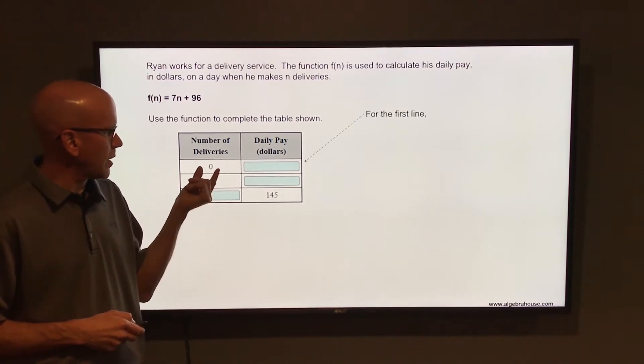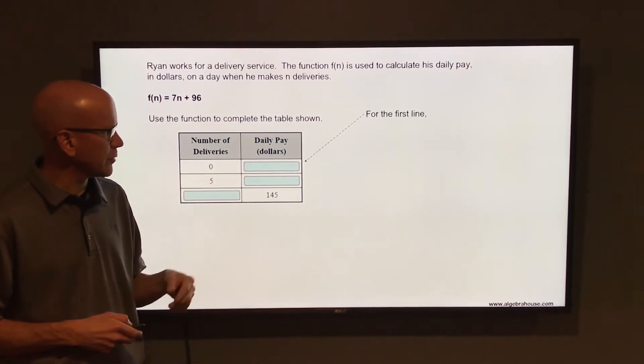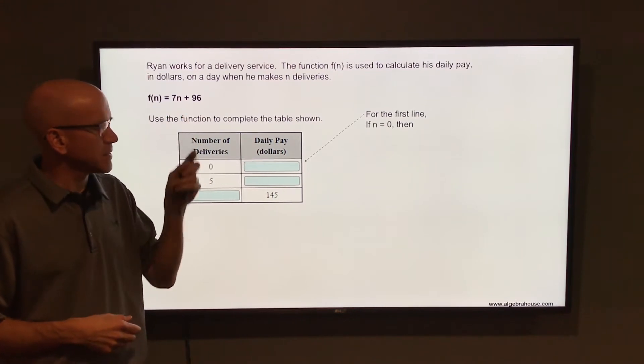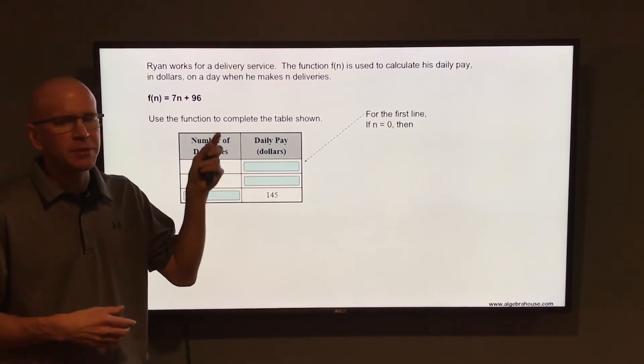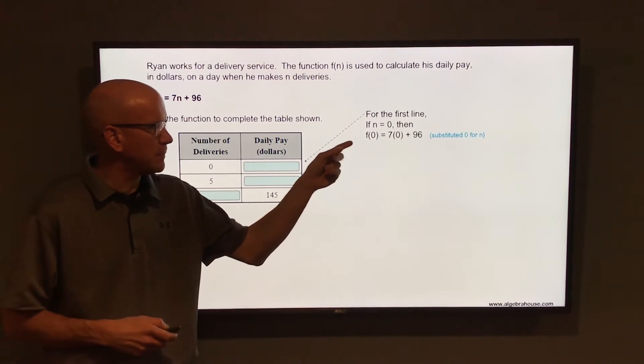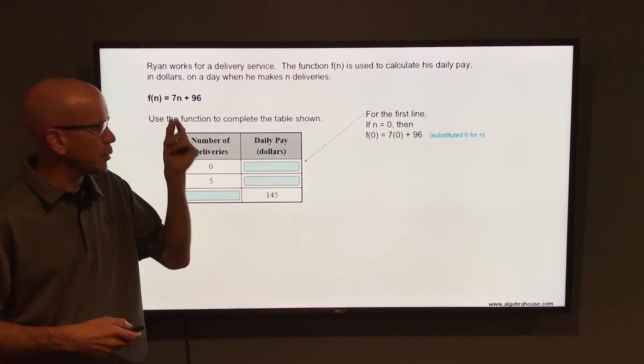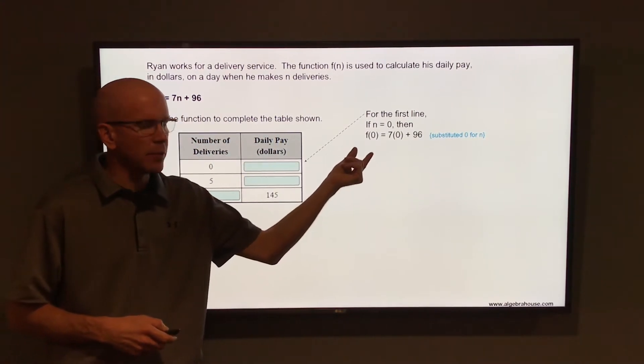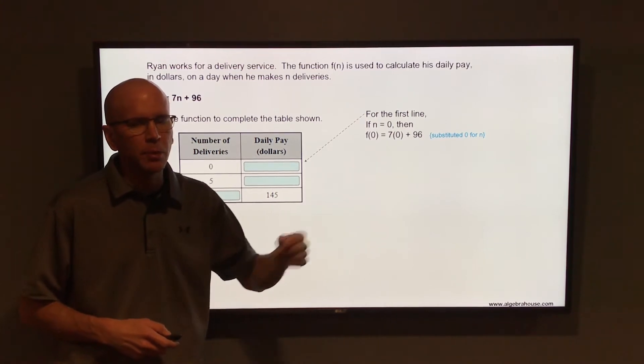So we're going to figure out how much he makes for zero deliveries. Remember n represents the number of deliveries, f(n) represents the total pay. So substitute 0 for n into this 7n + 96. So f(0) would be 7 times 0 plus 96.